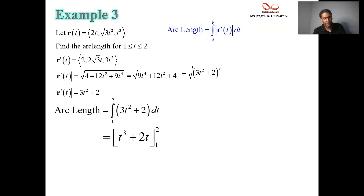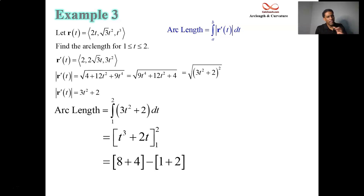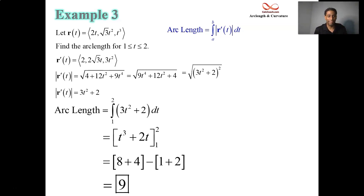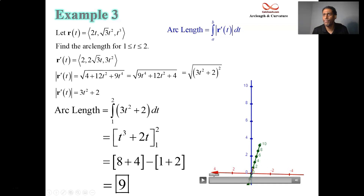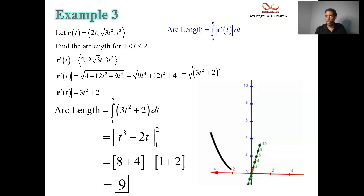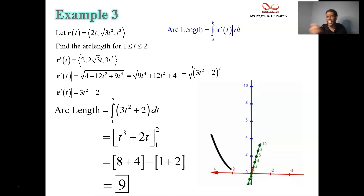Plugging in 2: 8 plus 4 equals 12. Plugging in 1: 1 plus 2 equals 3. Subtracting: 12 minus 3, the answer is 9. Here's the visual — a little more bend to it, fitting a parabola in y. The green is the y-axis and the blue is the z-axis.